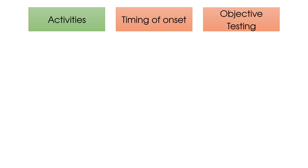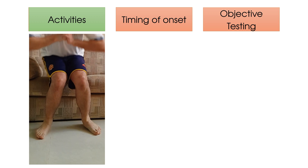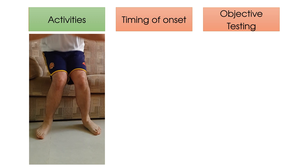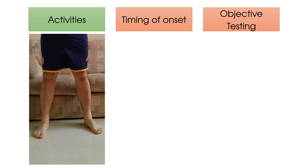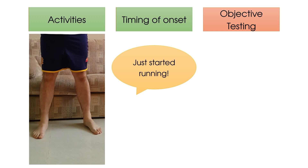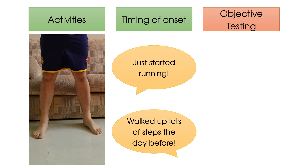If patients say getting out of a chair aggravates their lateral hip pain, check to see if their knees are in a valgus position when they stand up — definite increased hip adduction here. Also consider the timing of onset. Like with all tendinopathies, your patient may describe a sudden increase in activity, or a sudden burst of overload as a cause for their symptoms.